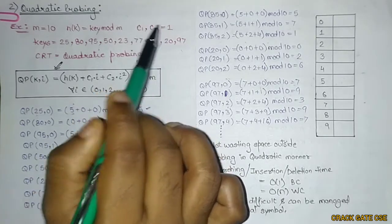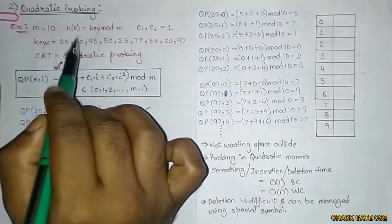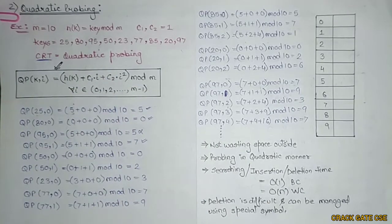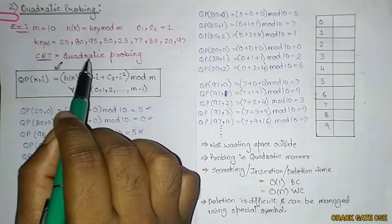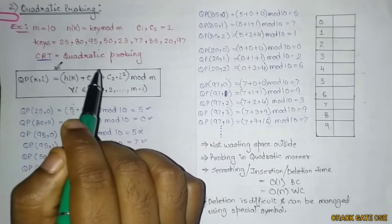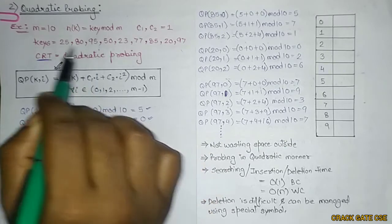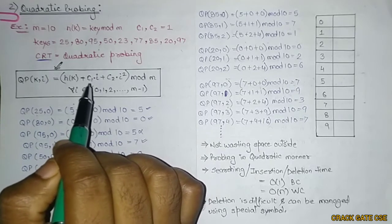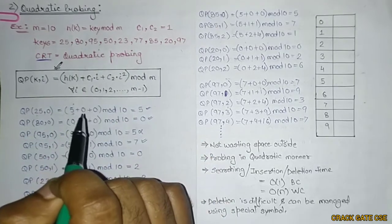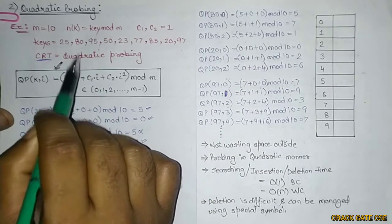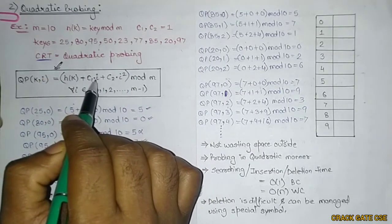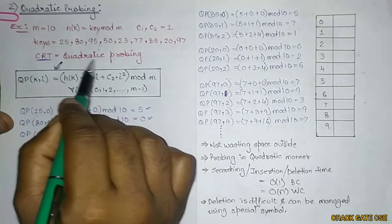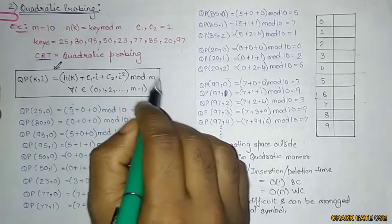C1 and C2 are constant values — both are 1 here. The formula for quadratic probing is: H(key, i) = (H(key) + C1*i + C2*i²) mod M, where i ranges from 0 to M-1. The i² term is responsible for the quadratic probing behavior. This formula is used to find the number of collisions or to map keys to the hash table.